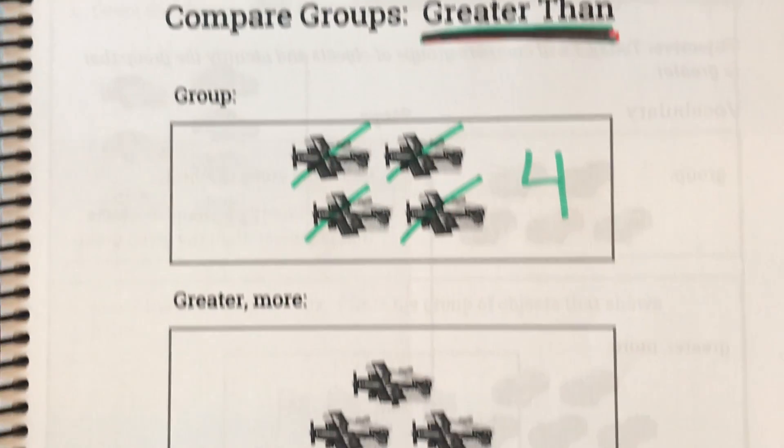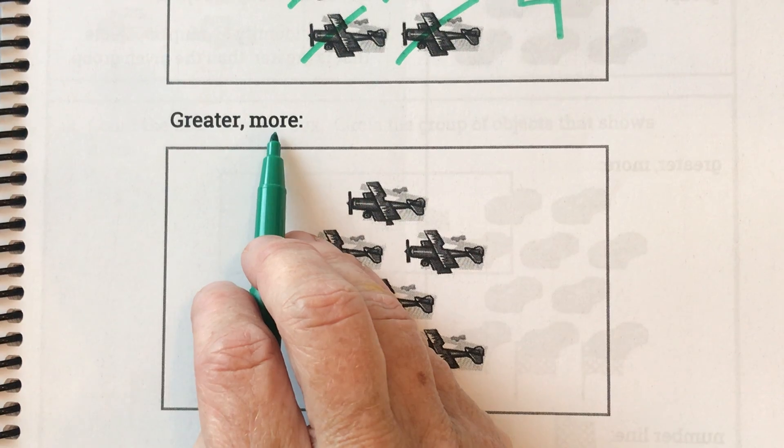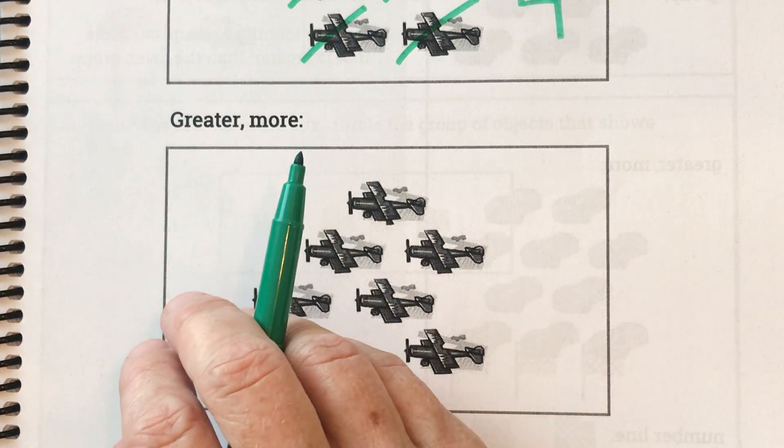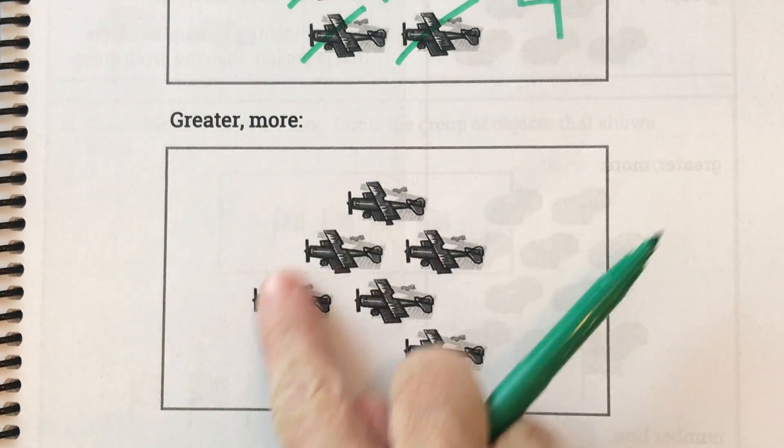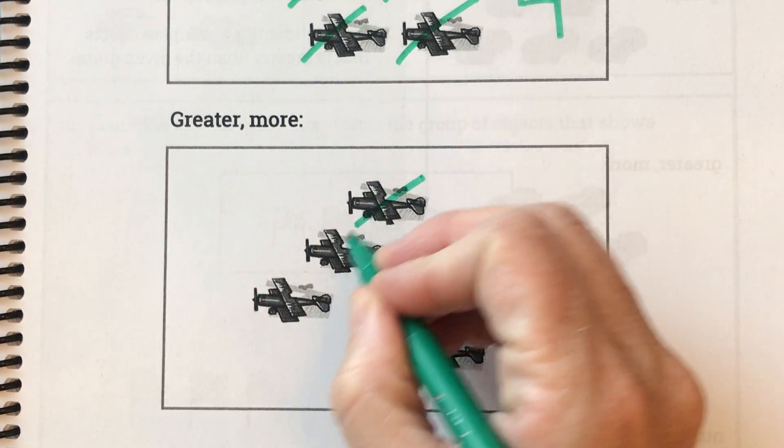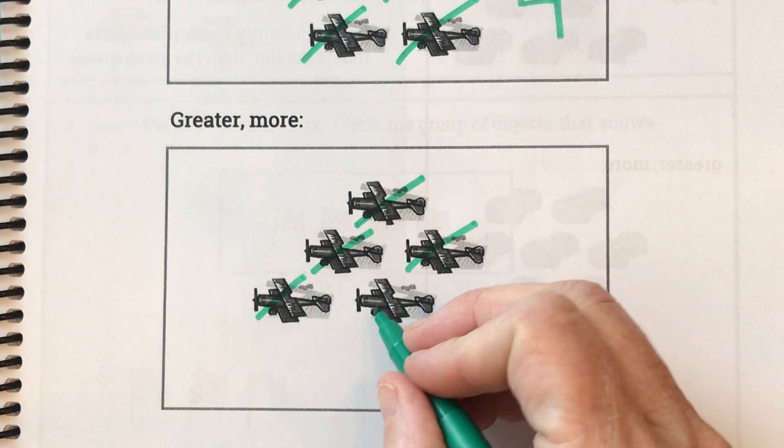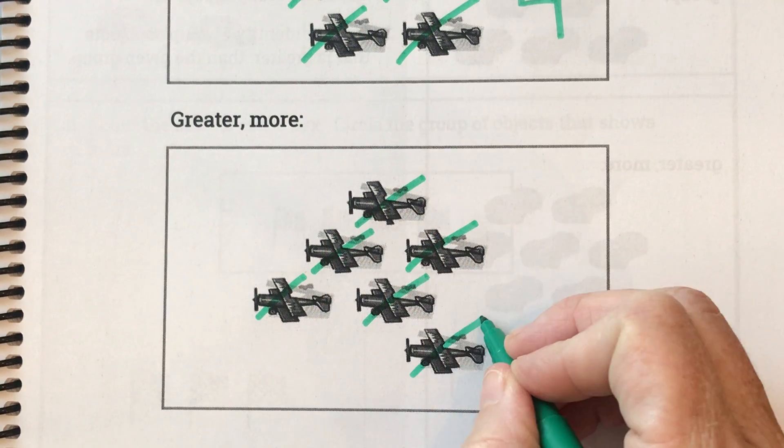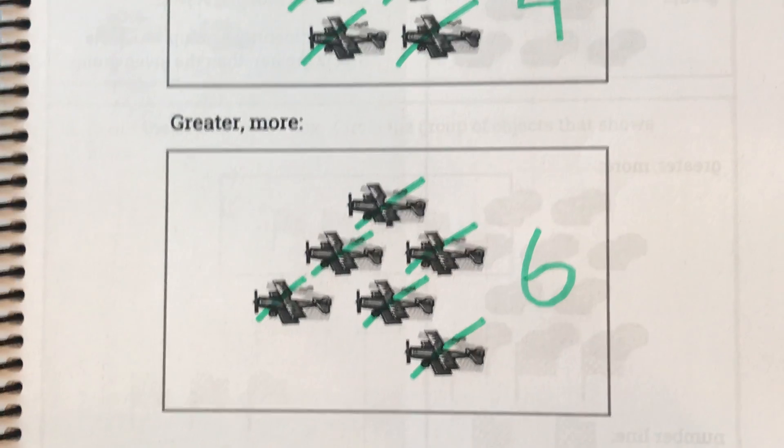Okay, let's look at this group down here. This says greater and more. Greater than just means more. There's more of them. So let's count how many planes are in this group. Ready? One, two, three, four, five, six. There are six planes in that group.